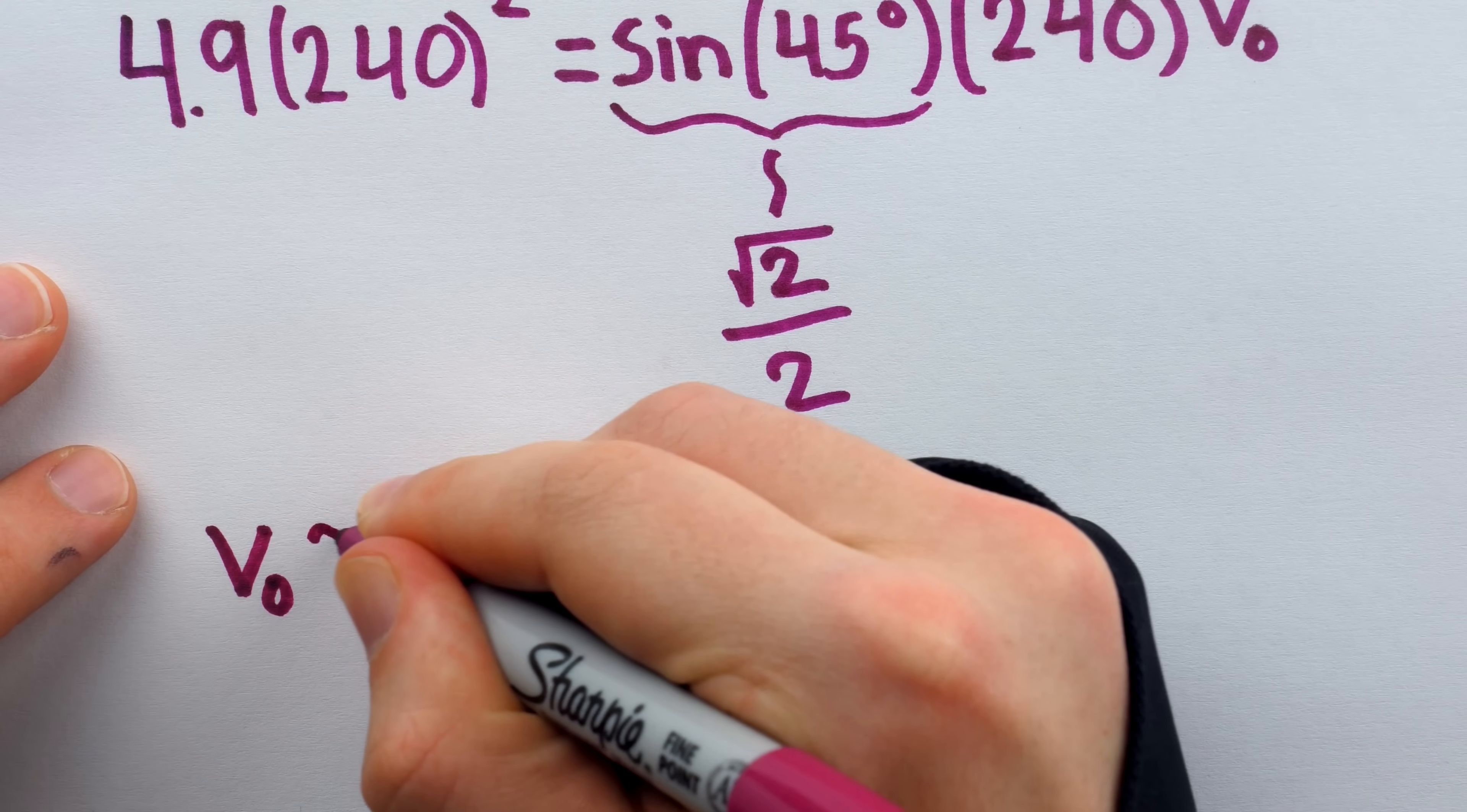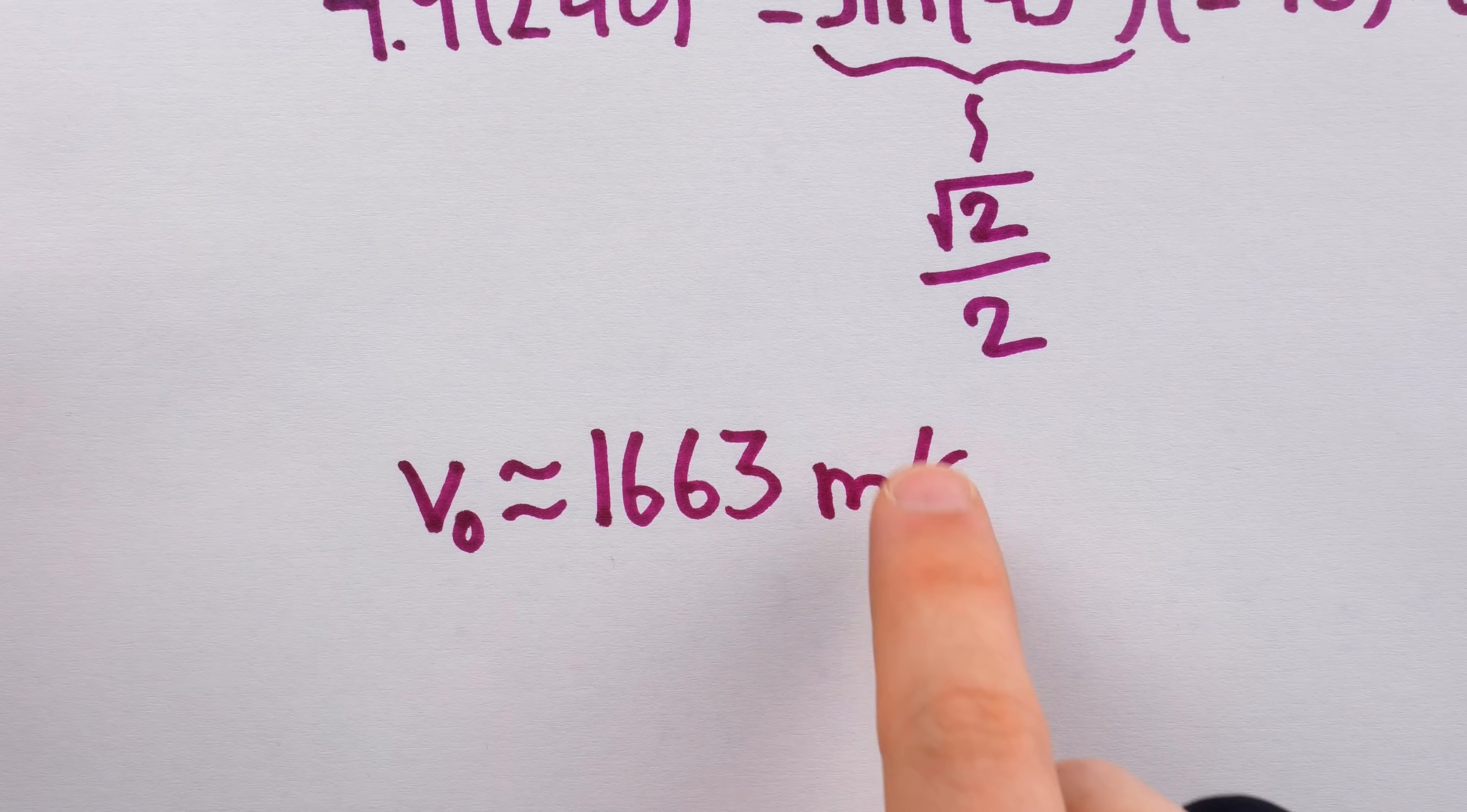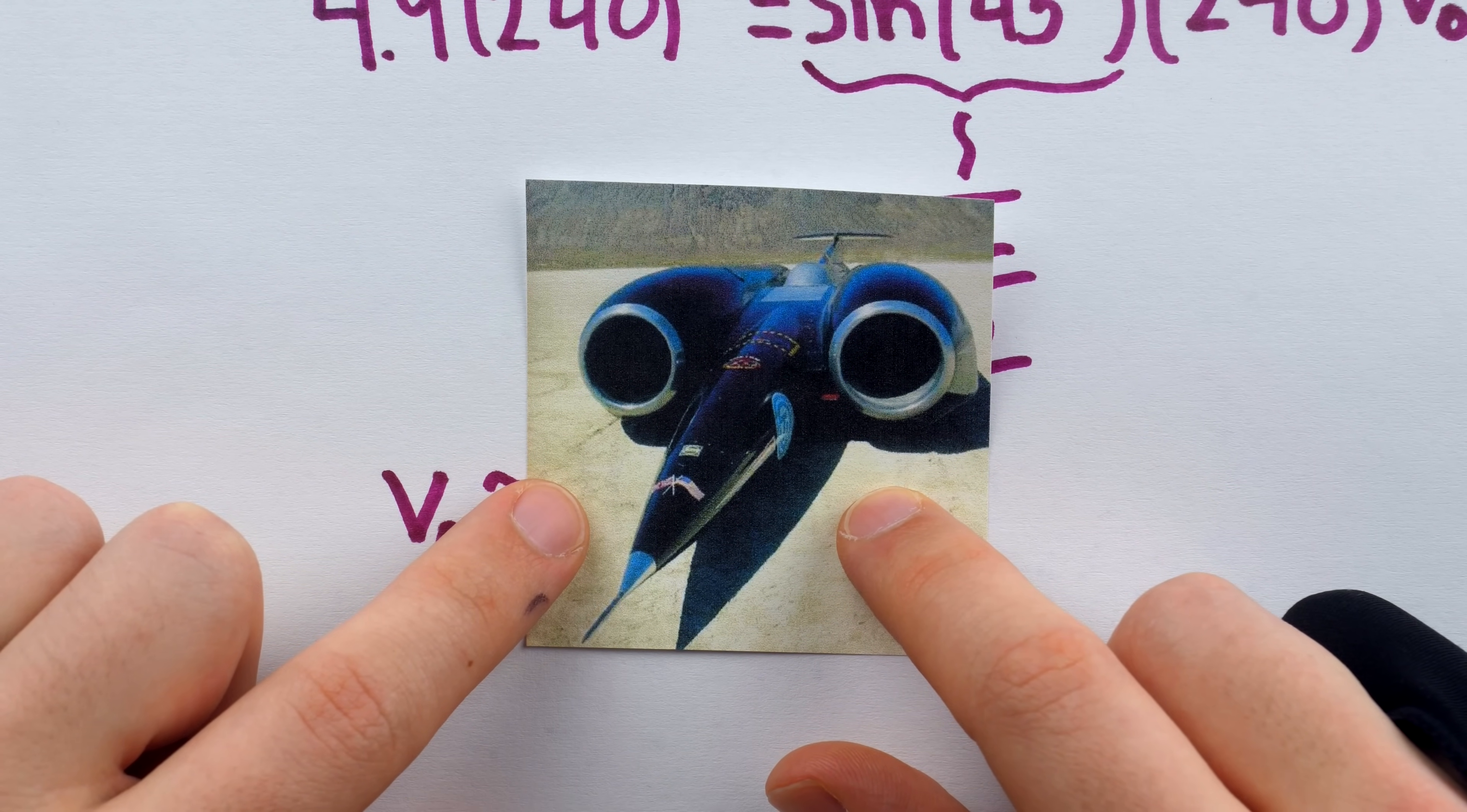All right. Well, I don't know about you guys, but I'm starting to get a little bit suspicious because this is awfully fast. Again, this suggests that Morning Man launched himself into the air at a speed of 1,663 meters per second. That's nearly five times as fast as the fastest land vehicle ever recorded, which traveled at over 1,000 kilometers an hour. That's the Thrust S.S.C. Pretty rad.